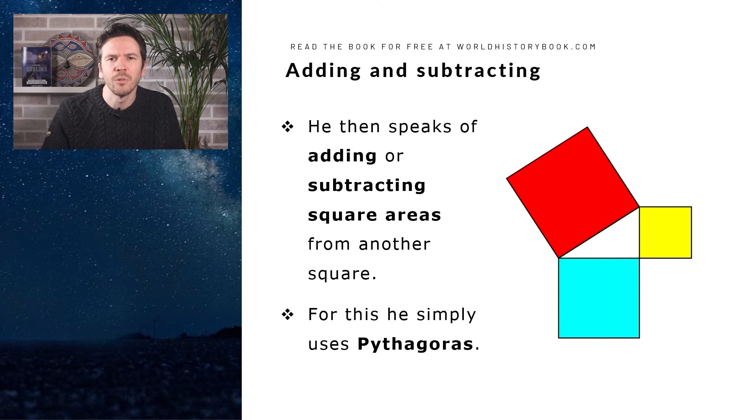He then speaks of adding and subtracting square areas. For this, he simply uses Pythagoras. If you want to add a blue square and the yellow square, we draw the Pythagorean diagram and we get the red square, which has an area equal to both of them. And the other way around, say we have the red altar, but we want to subtract the yellow altar, we get the blue altar underneath.